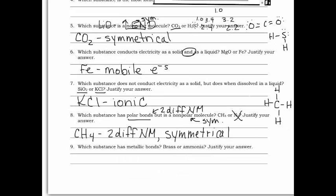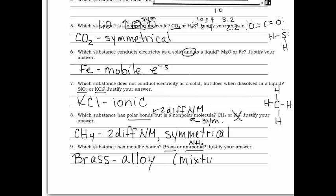Question nine: which substance has metallic bonds — brass or ammonia? Brass is an alloy, a mixture of metals. Ammonia, NH3, is covalently bonded. So the answer is brass. You can say it's an alloy, or if you think you'll forget that term, just say it's a mixture of metals.